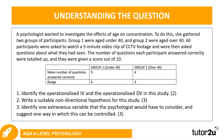What you can see on your screen now is quite common practice for research methods questions in psychology. It tends to start with some sort of passage or case study about a psychologist wanting to do a research project. Here, a psychologist wants to investigate the effects of age on concentration. She gathered two groups: group one aged under 40 and group two aged over 40. All participants watched a five-minute video clip of CCTV footage and were then asked questions about what they had seen. The number of questions each participant answered correctly were totaled and given a score out of 10.